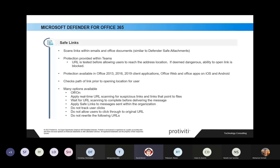There's also the 'do not rewrite URLs' option. When a URL comes to you, it's going to point to a location in your tenant, so the URL can look confusing. Usually I suggest leaving that on so the person can see what it's pointing at. It doesn't change what happens when you click on it — it still provides the same protection — but it just doesn't rewrite the URL in the email, so the user can actually see what they're clicking on.